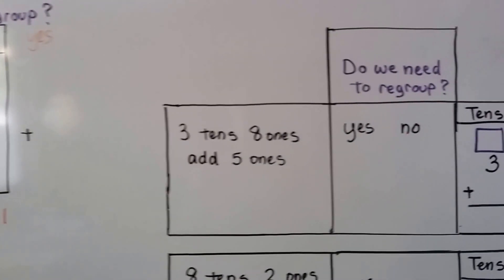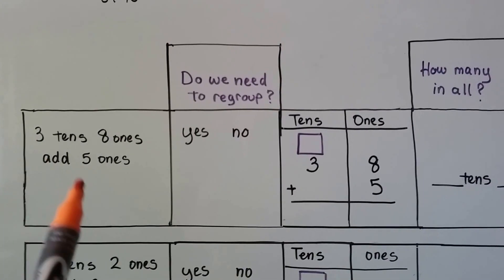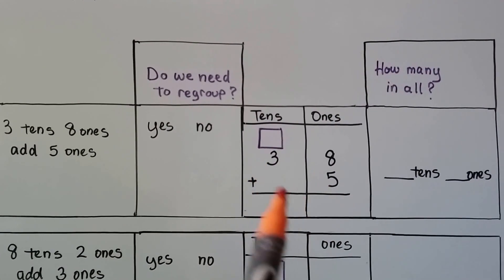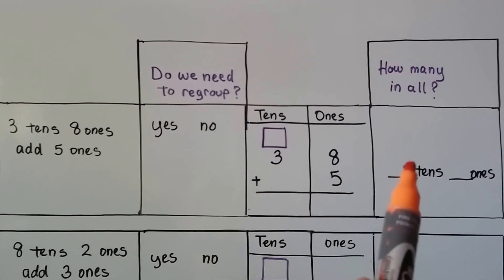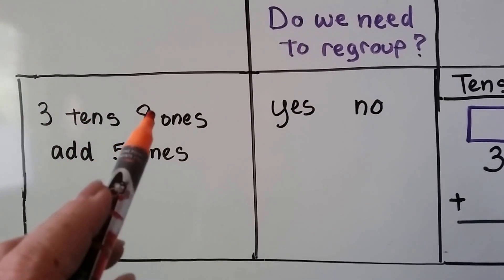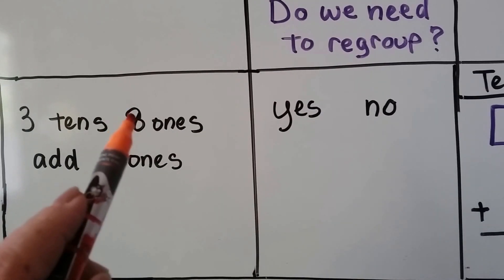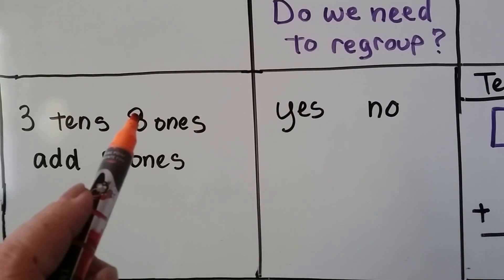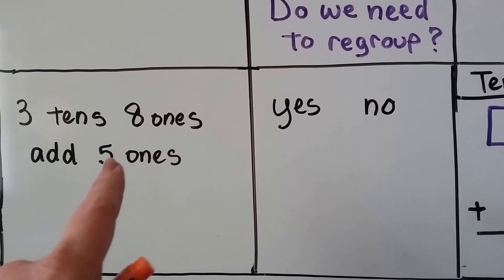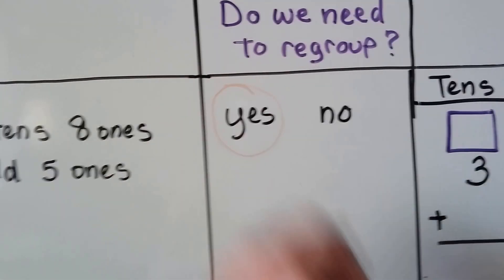Let's take a look at these. If we have 3 tens and 8 ones, and we add 5 ones, we need to see if we need to regroup. We're going to use this work area, and then we're going to find how many tens and ones are in all. If we have 3 tens and 8 ones, and we add 5 ones, how many more ones do we need to make a 10 from this 8? 8, 9, 10. We only need 2 ones to make another 10. We have 5 ones. Do we need to regroup? Yes, because we're going to have too many ones.